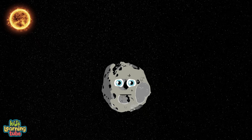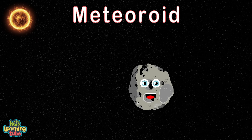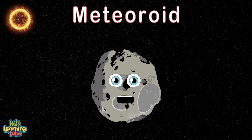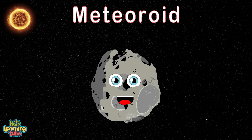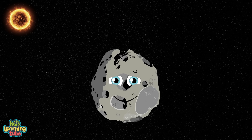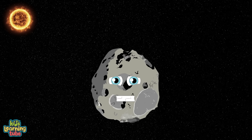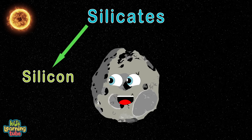I'm a meteoroid — I'm smaller than an asteroid, you see. My size can range from a grain of dust to a small asteroid, yeah that is me. I orbit the sun; I'm made of minerals called silicates, which is silicon and oxygen.